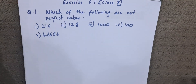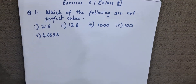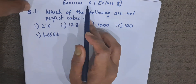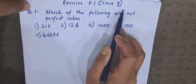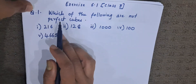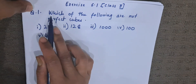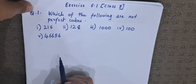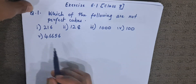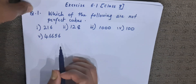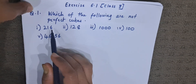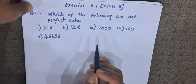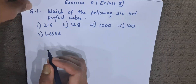Hello everyone, welcome to AG Mathematics. This is Reka here. Today we are going to do Exercise 6.1 of Class 8, Question Number 1. The question is: which of the following are not perfect cubes? They have given us 5 sums and they are asking us if these given numbers are perfect cubes or not.